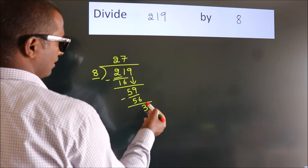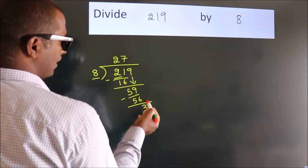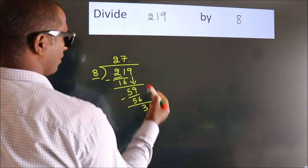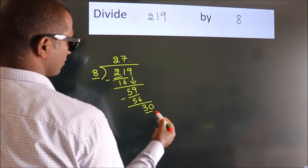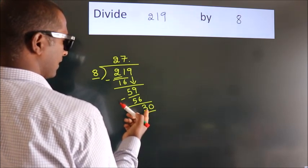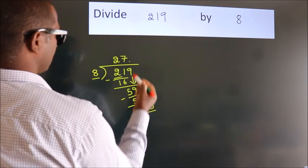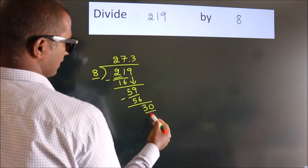After this, no more numbers to bring down. So what we do is put a dot and take 0. So, 30. A number close to 30 in the 8 table is 8 threes, 24.